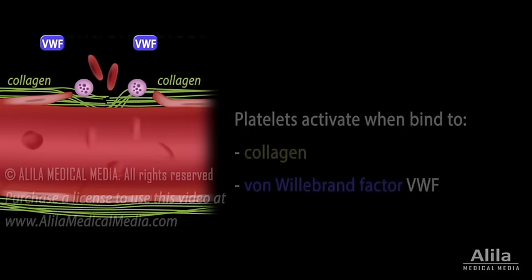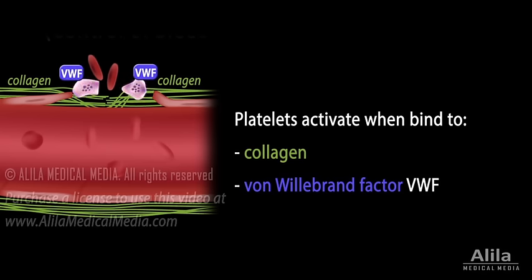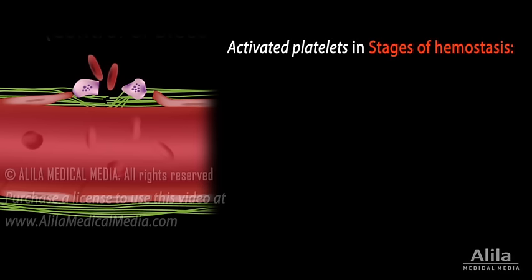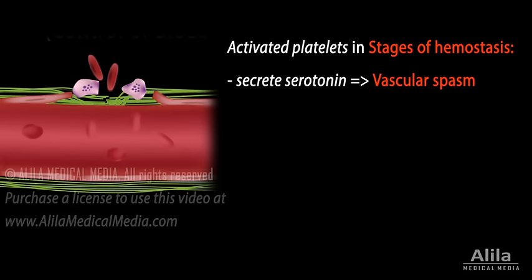When blood vessels are damaged, blood is exposed to components of the surrounding tissue. Some of these components bind to and activate platelets. Activated platelets are involved in all stages of hemostasis. First, they secrete chemicals that induce blood vessels to constrict, thereby reducing blood loss. This is known as vascular spasm, the most immediate response to tissue injury. Vascular spasm is also triggered by local pain receptors and by substances released by endothelial cells.